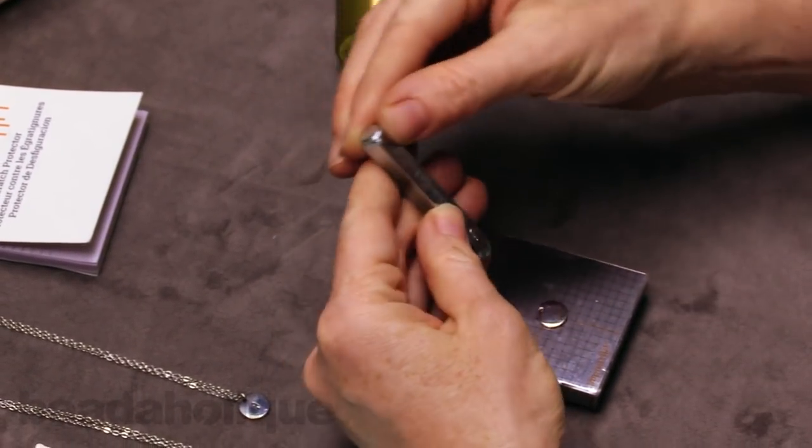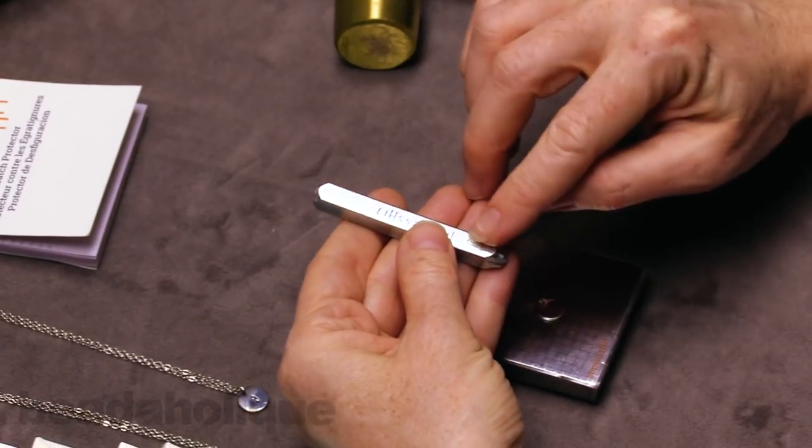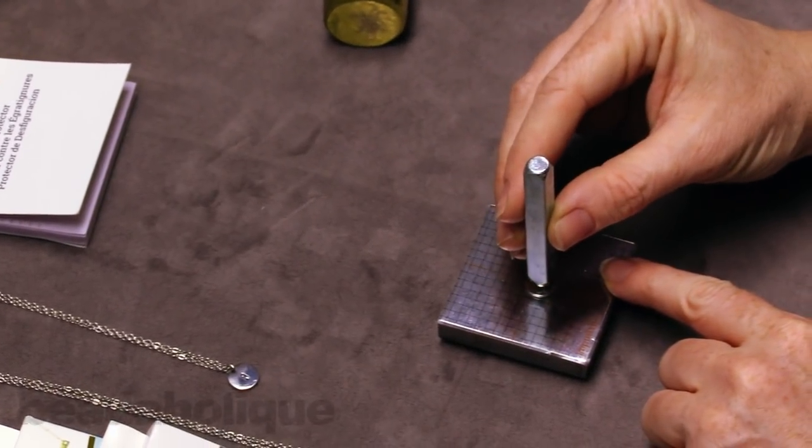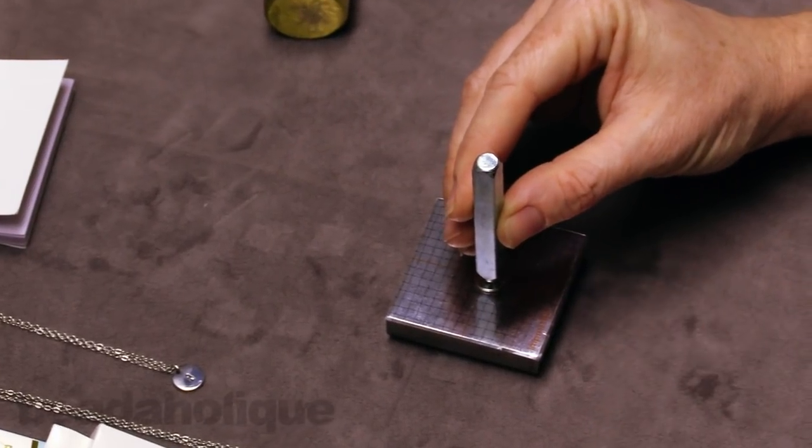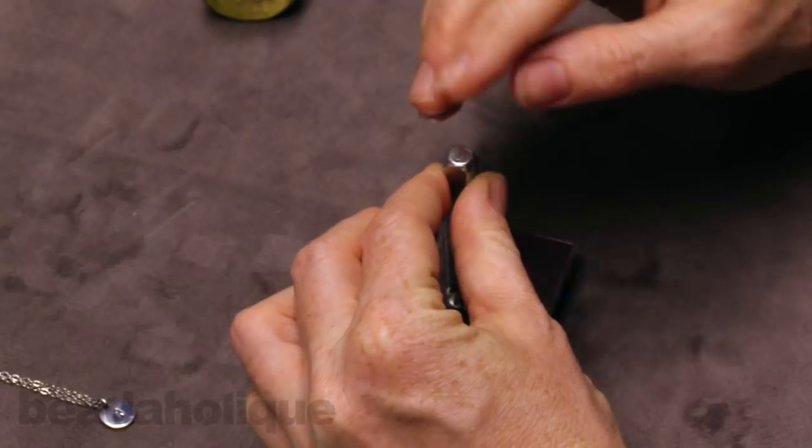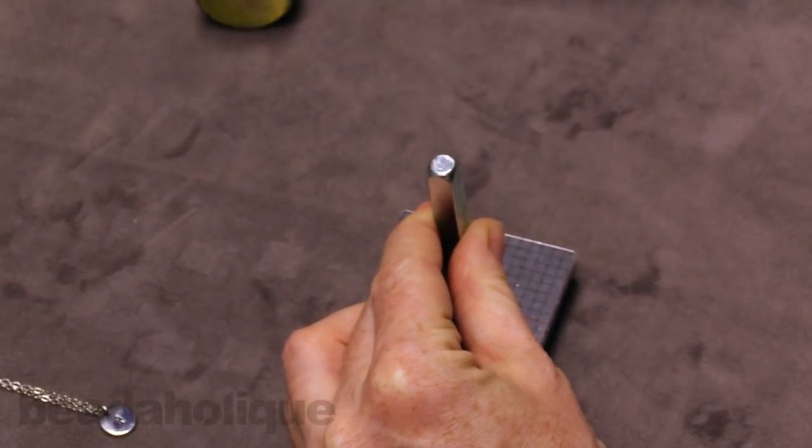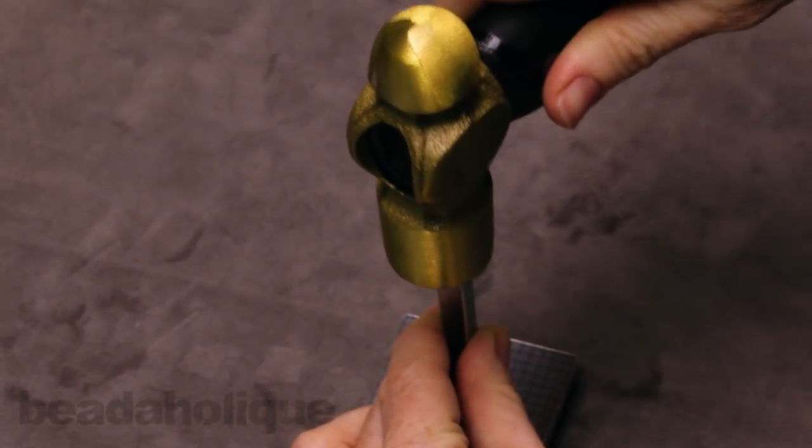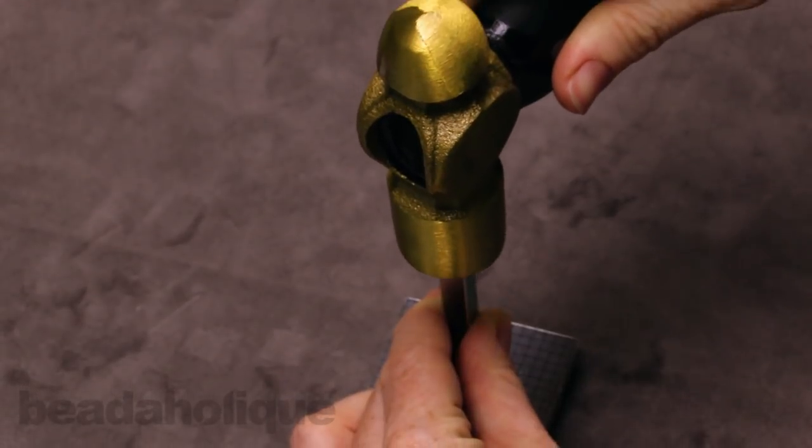Now when you're doing these stamps, what's really great about ImpressArt is they put their logo on it and they put whatever the stamp is right down here at the bottom. So you always want that facing you. So then when you tilt it up, you know that it's oriented properly. So I'm just going to try to center this right on my stamping blank here. I'm kind of going to look at it from a couple different angles. Make sure it looks good.